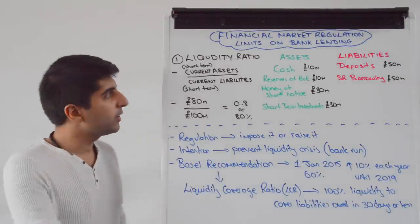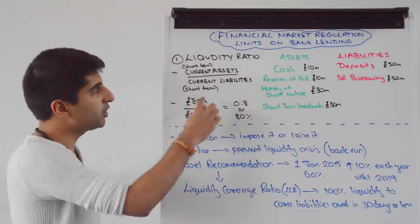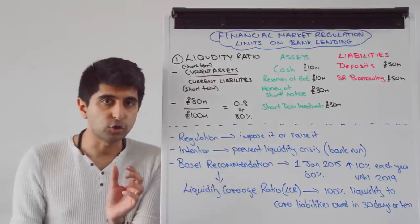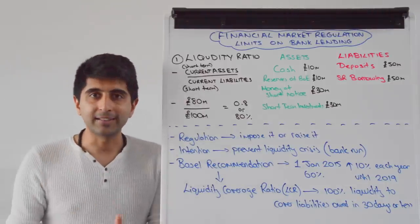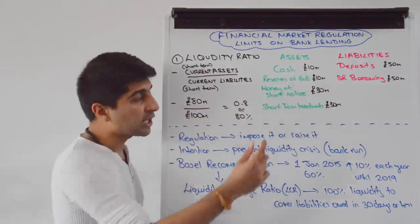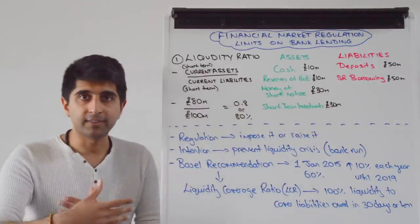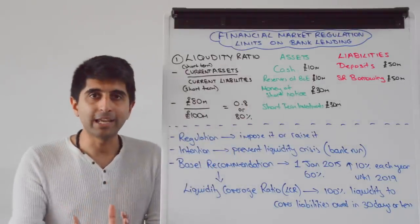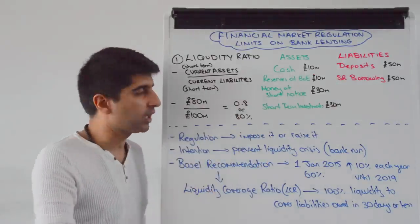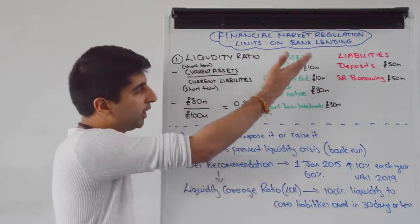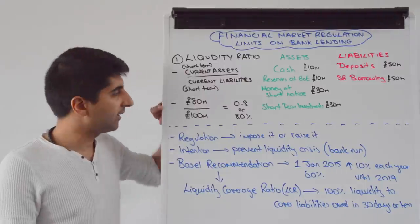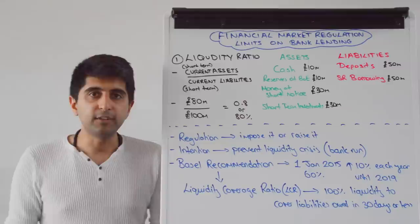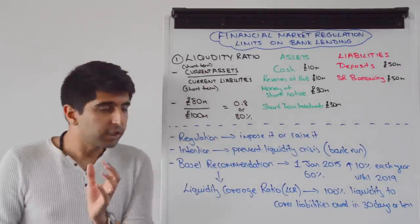Here is the equation to work out a liquidity ratio: current assets divided by current liabilities — that is short-term assets divided by short-term liabilities. There are four assets that count as current assets: cash, reserves of the Bank of England, money at short notice (that's any interbank lending), and any short-term investments. Taking our numbers, £80 million of current assets divided by £100 million of current liabilities gives a liquidity ratio of 0.8 or 80%.